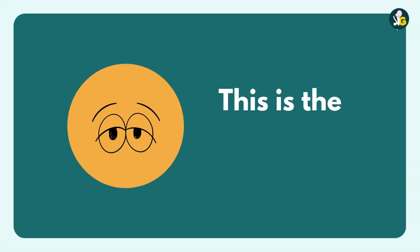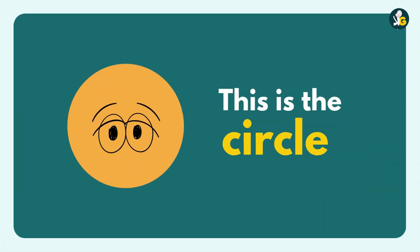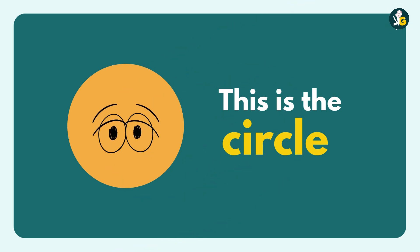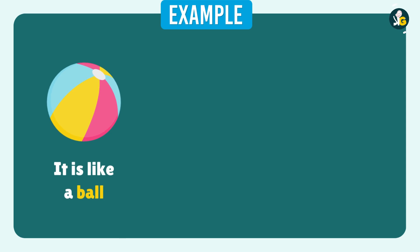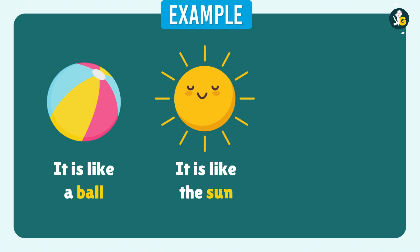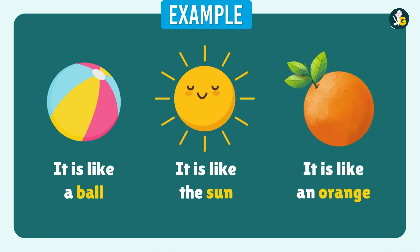This is Circle. Round, round, circle — it rolls around and around like a ball. It is like the sun, and it is like an orange. They are all round in shape.